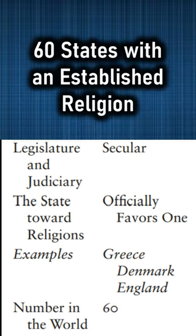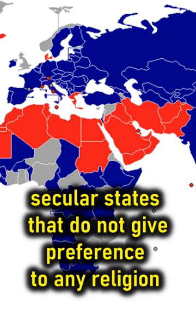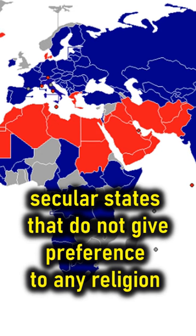Next, countries with secular legislation but with an established state religion, such as Greece, Denmark, or England. There are 60 such countries in total.